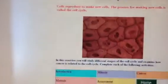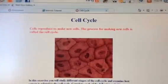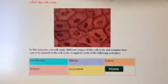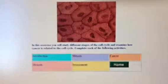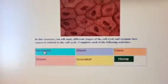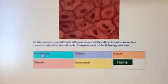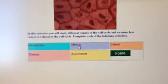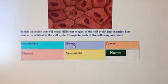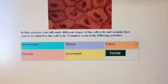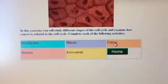This is the cell cycle. The instructions tell you to answer the mitosis link in the purple box. In order to answer the questions over mitosis, you're going to want to read through the introduction, then answer the mitosis questions by clicking on that link, then answer the questions on cancer by clicking on the cancer term in the orange box.